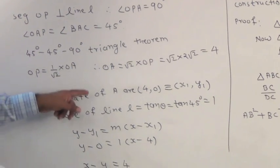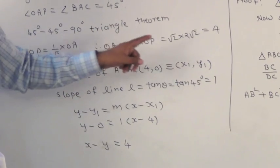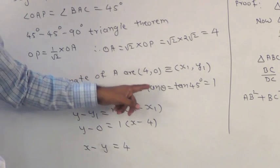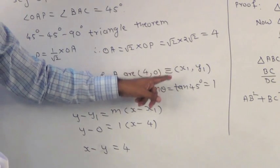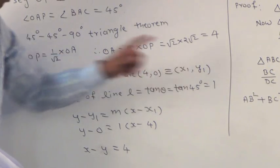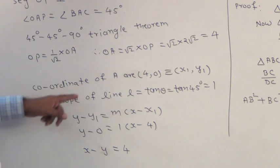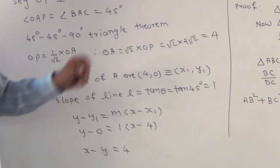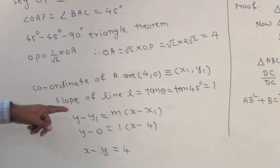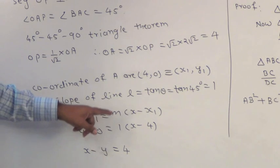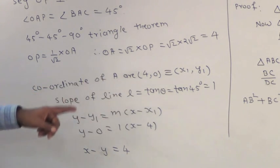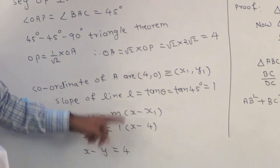The coordinate of A is (4, 0); let this be (x₁, y₁). The slope of line L equals tan θ equals tan 45° equals 1. The equation of the required line is y − y₁ equals m(x − x₁). Substituting values, y − 0 equals 1·(x − 4). After solving, we get x − y equals 4, which is the required equation of the line.